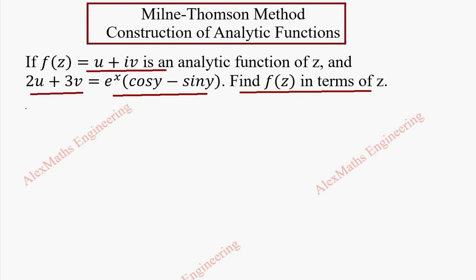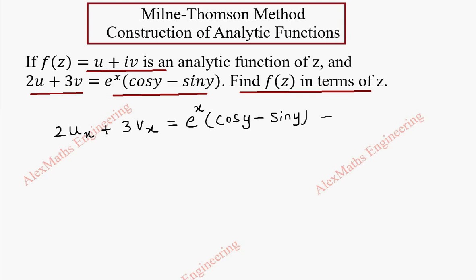So 2ux plus 3vx equal to — here y terms are constant, so derivative of e power x is e power x and all the constants stay as they are, cos y minus sin y is a constant. This is our first equation.